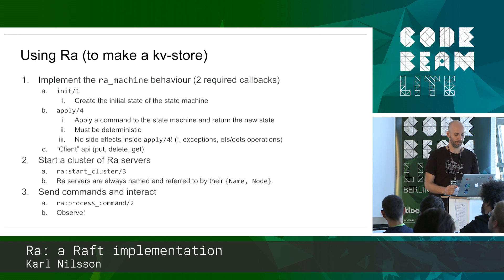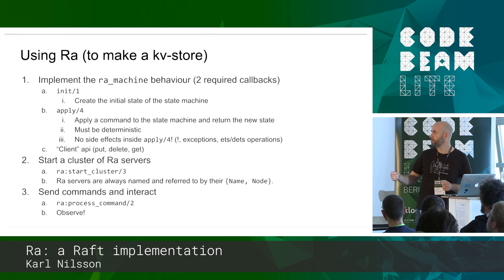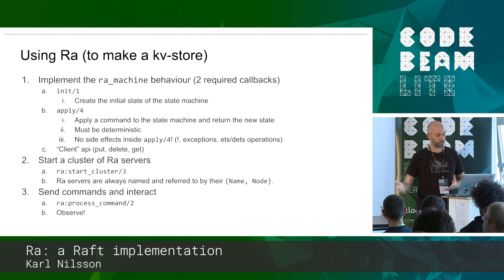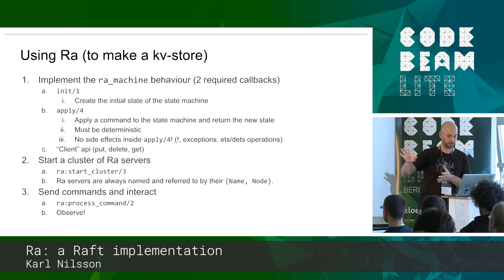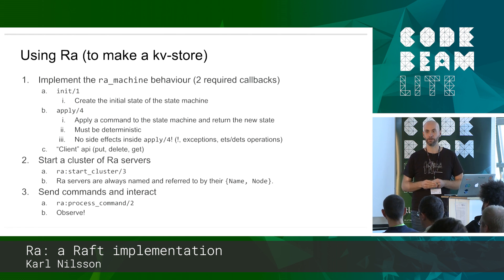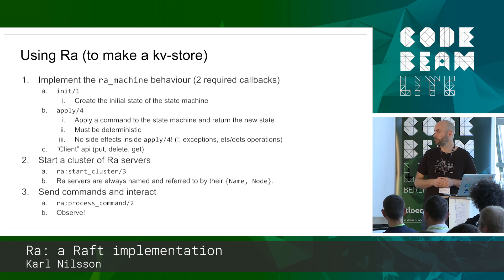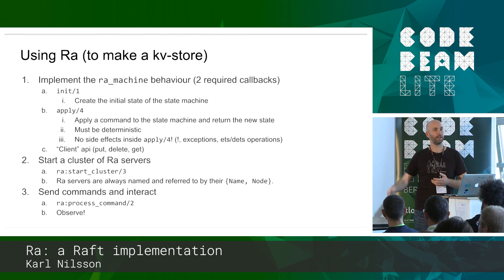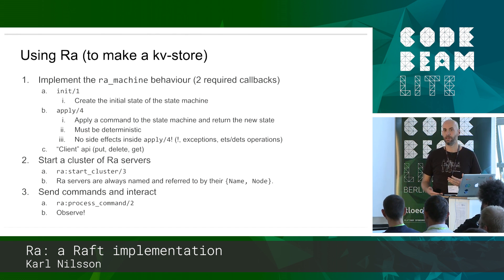We're going to typically implement a client API - put and get. Then we start a cluster of Ra servers using ra_start_cluster. Ra servers in a Ra cluster are always locally registered processes with a local name. In the cluster they're referred to by their name and the node they're running on, their Erlang node. Then we're going to send some commands using ra_process_command to interact with the Ra cluster and open up Observer to build some intuition about how the system behaves.